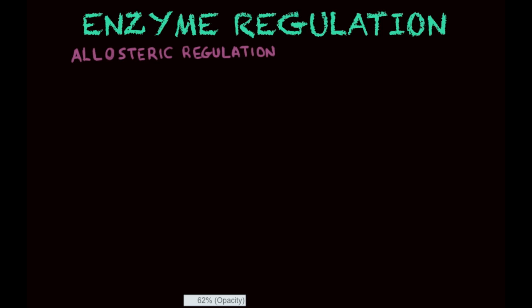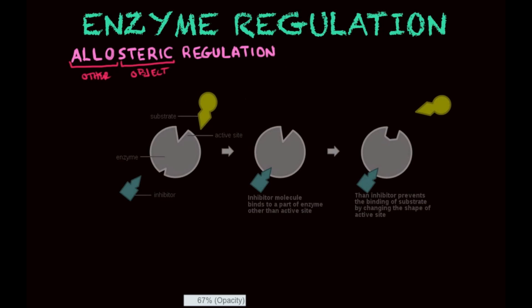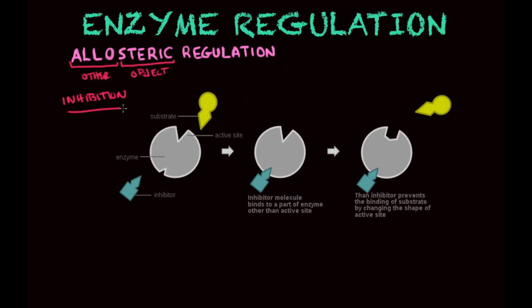The second type of regulation is allosteric regulation. Looking at the word origin — it has Greek roots — 'allos' means 'other' and 'steric' means 'object' or shape. So it means the enzyme will undergo some sort of change in shape, which will allow regulation — turning on or off. I have an example of allosteric inhibition here, which is switching off the enzyme.